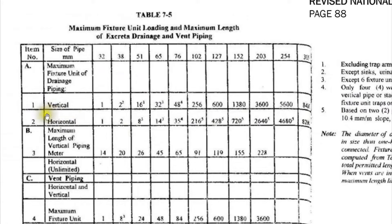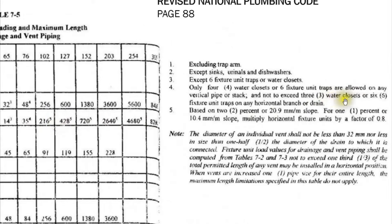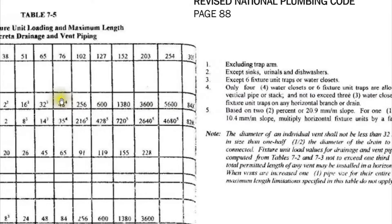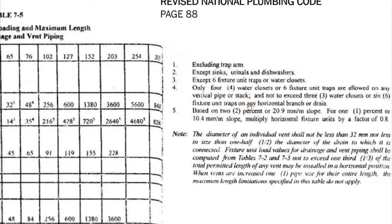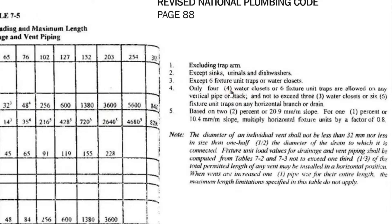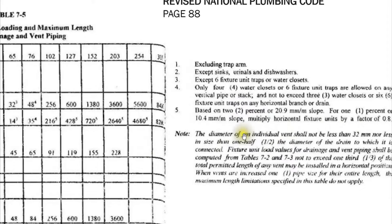For the horizontal pipe, the number of water closets connected should not exceed three — meaning no more than three fixtures with a drainage fixture unit of six. So remember: if your fixture unit has a superscript of 4, count the number of water closets connected to that pipe. If it is more than four, move to the next higher value for vertical pipe. If it is more than three, move to the next higher value for horizontal branch.